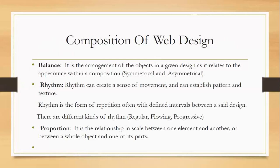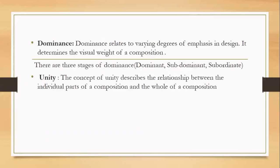Next is proportion, which refers to the relationship between one element and another, or between the whole object and one of its parts. Next is dominance, which relates to varying degrees of emphasis in the design — highlighting the most important things differently from less important ones. Based on emphasis, there are three stages: dominant is the most emphasized, subdominant is less emphasized, and subordinate is the least emphasized.